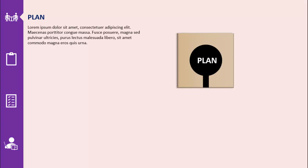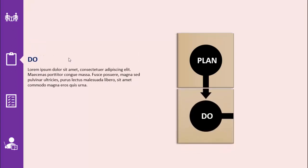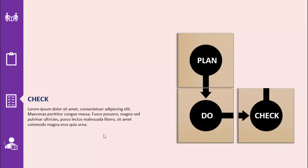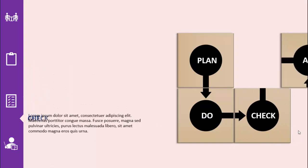In today's tutorial, I'm going to show you how to create a morph transition in PowerPoint. I've taken the example of PDCA — that is Plan, Do, Check, and Act. I've added one shape called Plan with some text and detailed text, along with icons. When I click, it will move to the next one: Do, then Check, then Act.